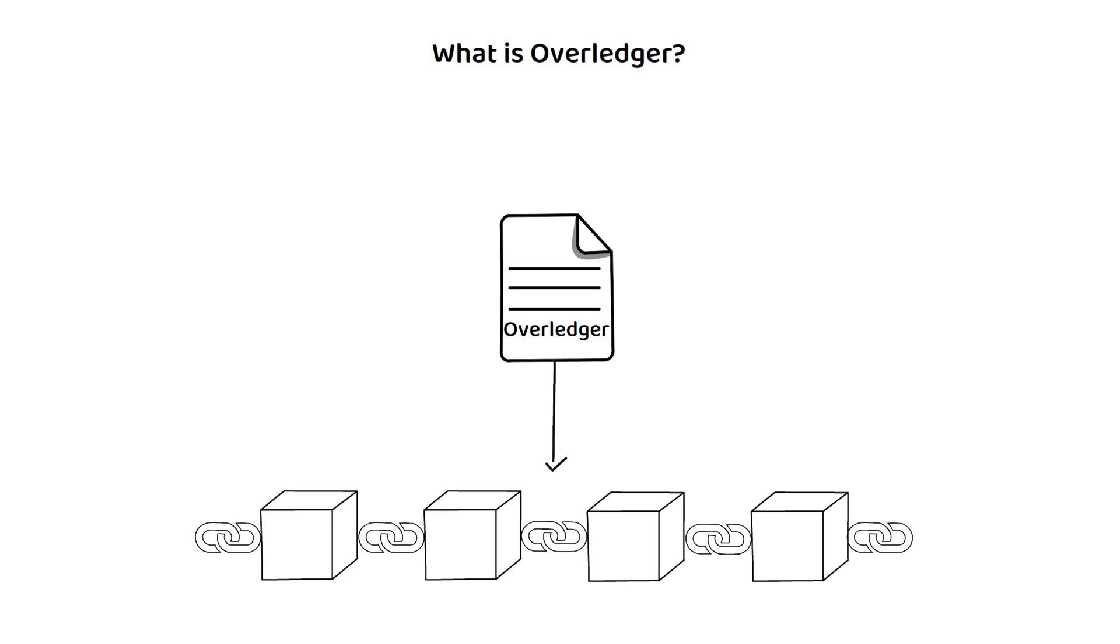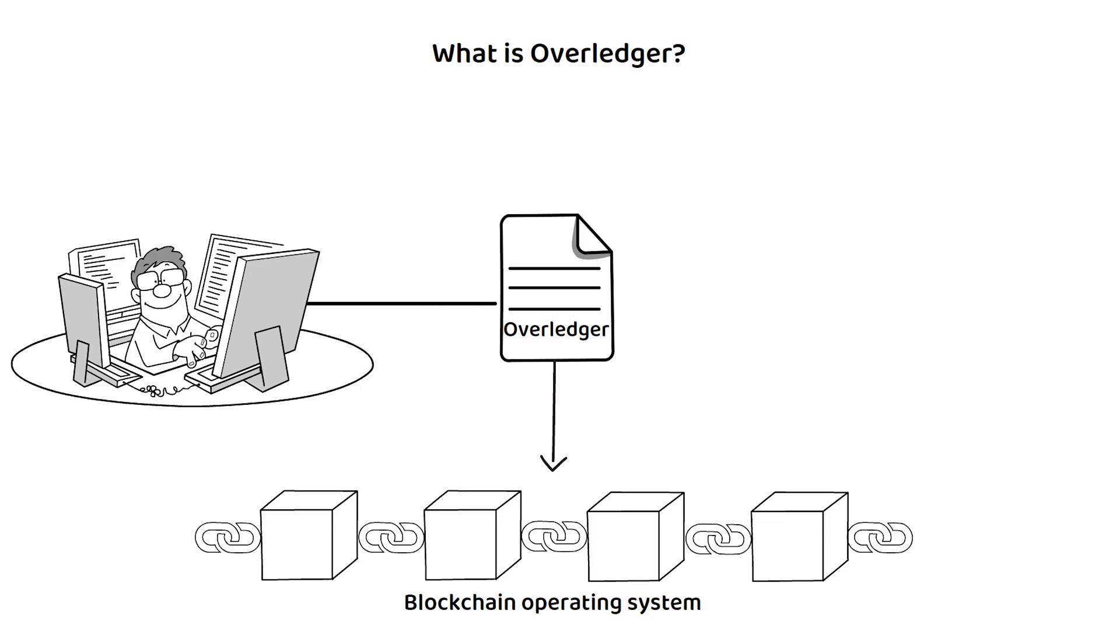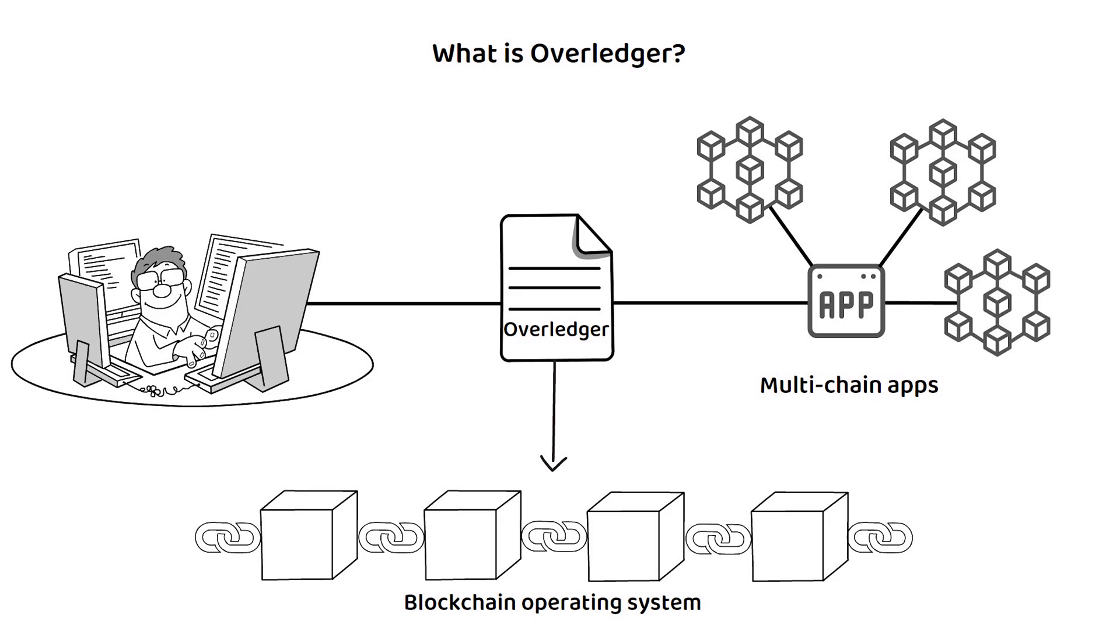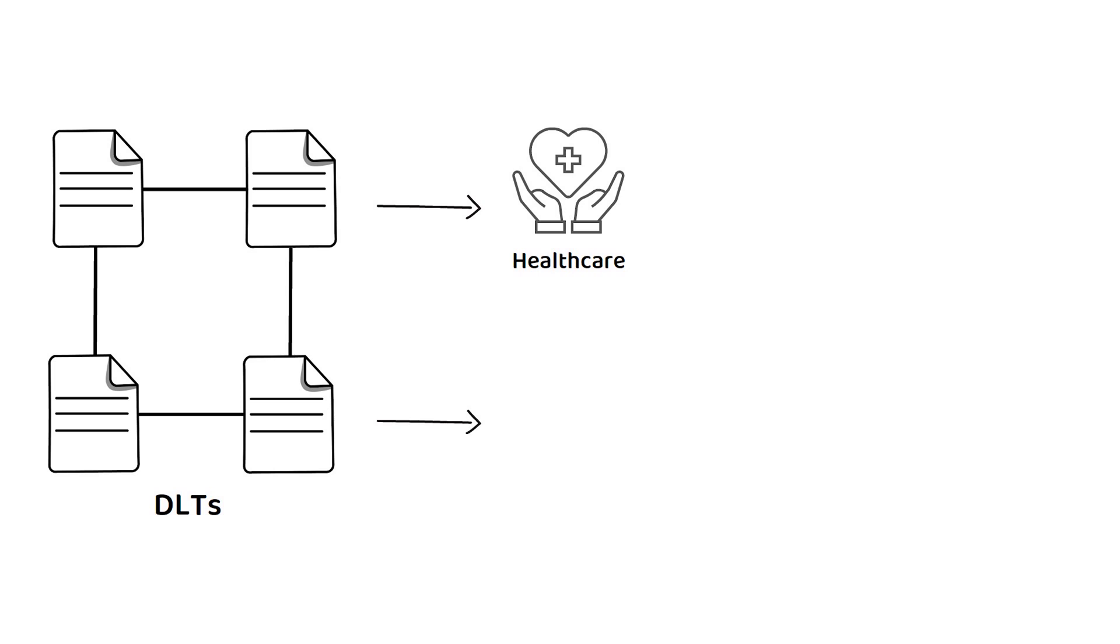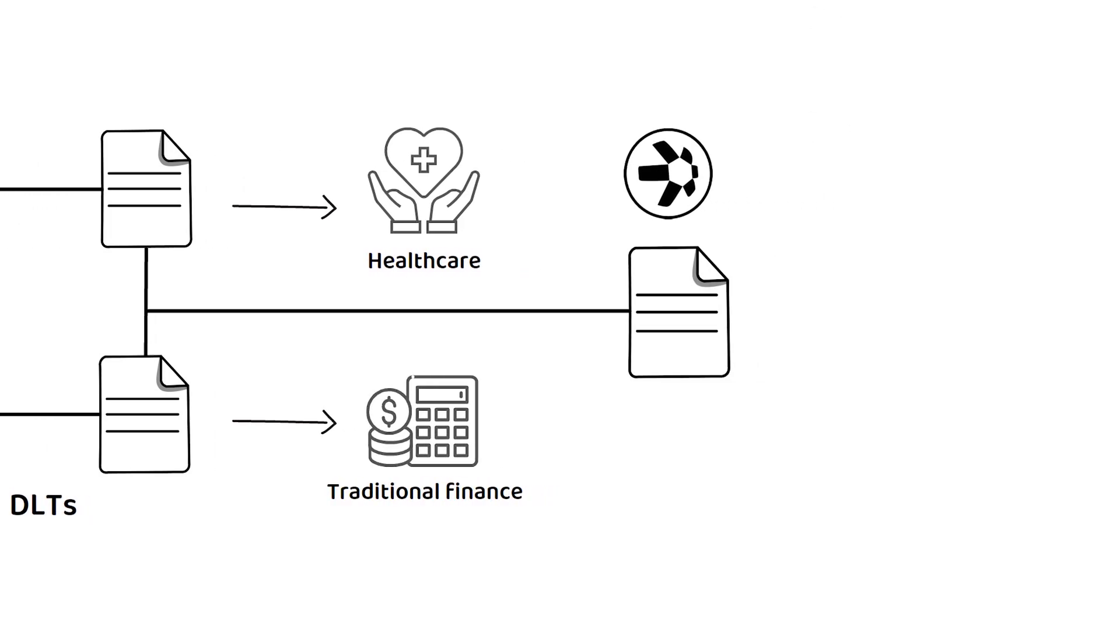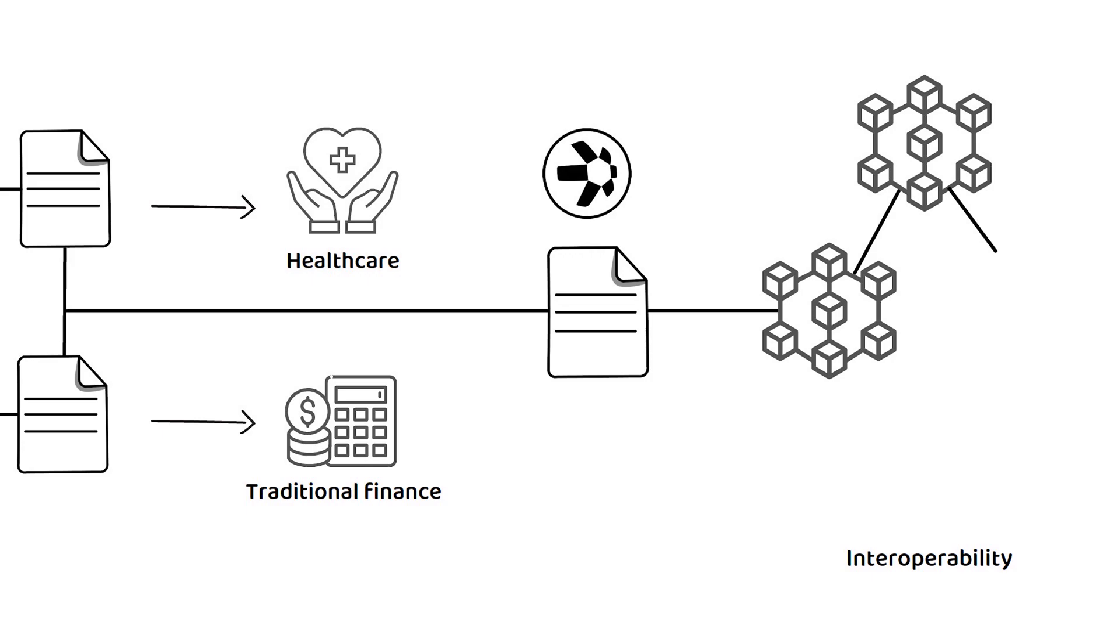At its core, the Overledger is a blockchain operating system that allows developers and enterprises to build multi-chain applications. As the word multi-chain implies, these applications are designed to work across multiple independent blockchains. Although DLTs can be used for many applications outside of cryptocurrencies, such as in healthcare or traditional finance, Quant's Overledger was created specifically as a way to solve the blockchain's interoperability issues.